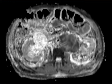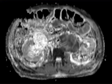Incidental note is made of moderate hydronephrosis on the right, an unrelated finding. The differential for this mass includes retroperitoneal sarcoma as well as lymphoma, given the prominent diffusion characteristics.